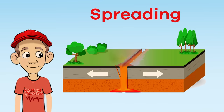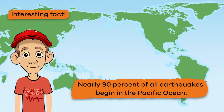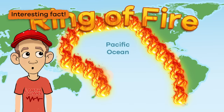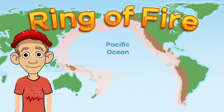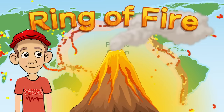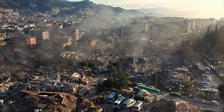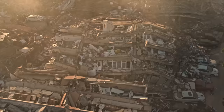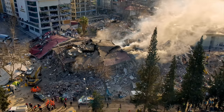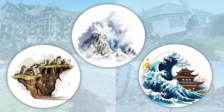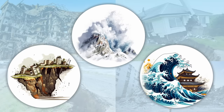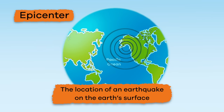Spreading happens when plates move apart from each other. When they do, melted rock between the plates rises and cools, forming new crust. Here's an interesting fact: nearly 90 percent of all earthquakes begin in the Pacific Ocean in an area called the Ring of Fire. It's called the Ring of Fire because, along with earthquakes, it's filled with many active volcanoes. More than 450 earthquakes can be powerful enough to change the surface of the earth and can do a lot of damage, and sometimes earthquakes can even cause other natural disasters like avalanches, landslides, and tsunamis.